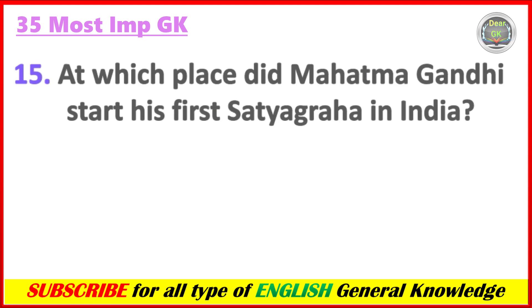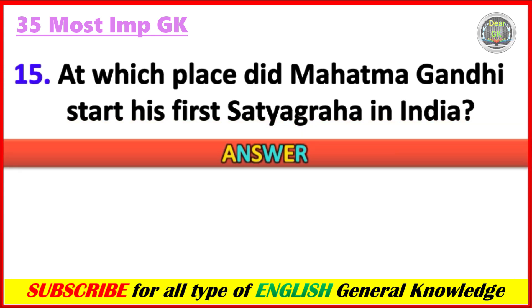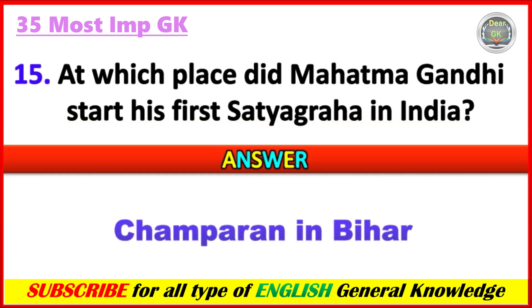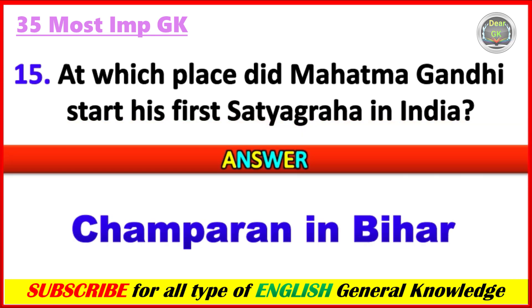At which place did Mahatma Gandhi start his first Satyagraha in India? Answer: Champaran, in Bihar.